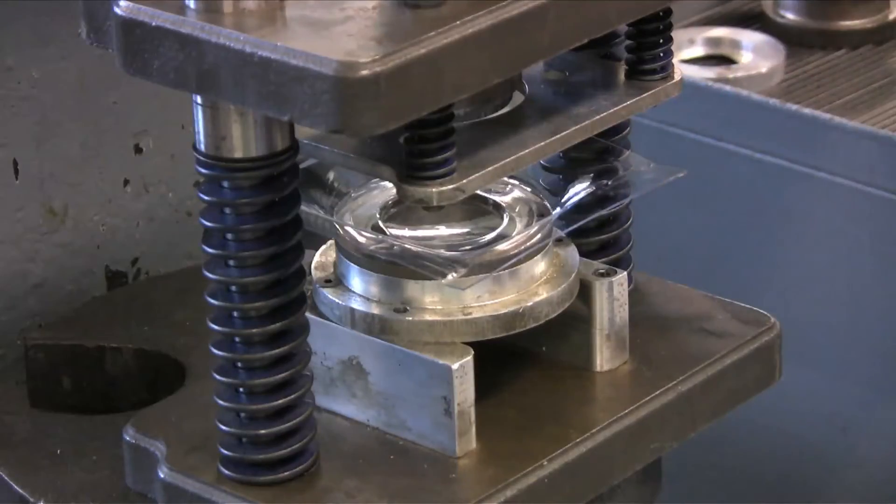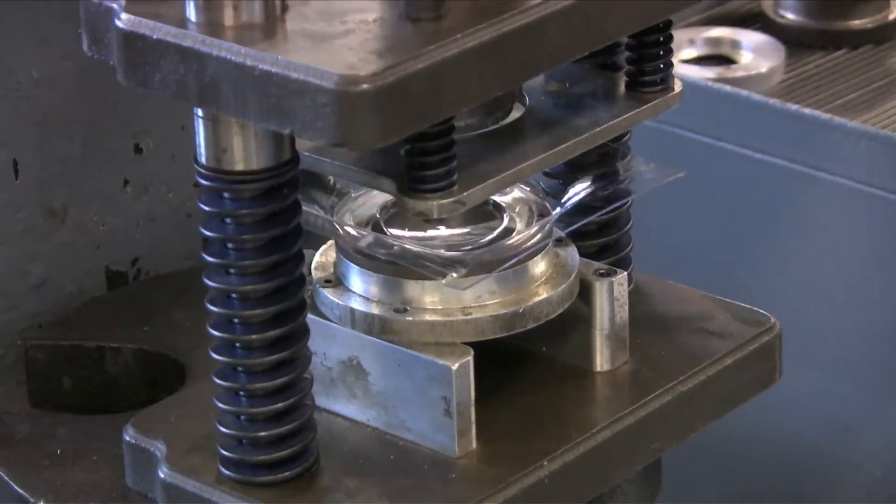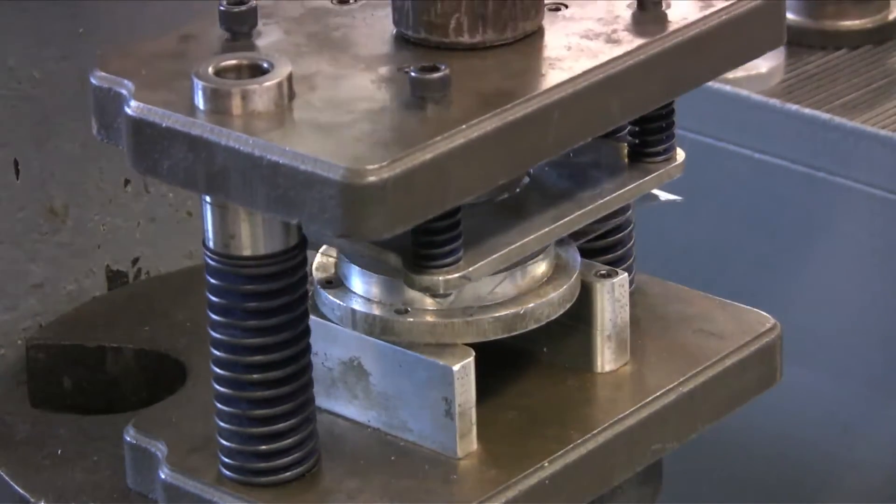The excess material must be cut away to get the desired part. The punch and die is used to shear away unwanted material.